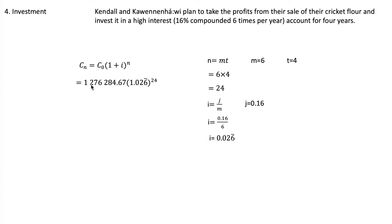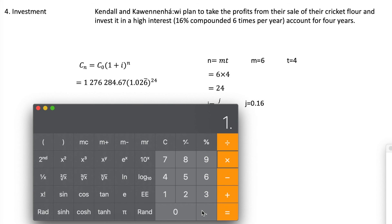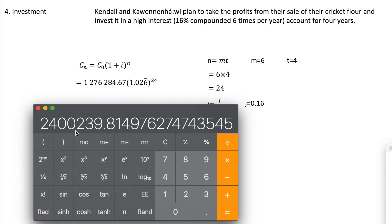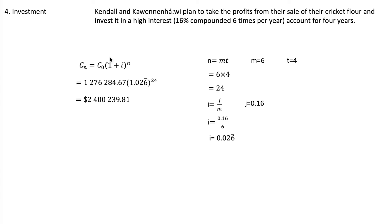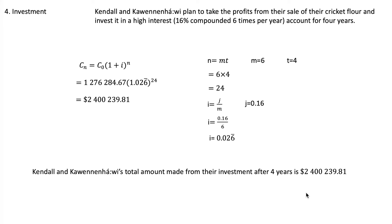So: $1,276,284.67 times 1.02666 repeating to the power of 24 equals $2,400,239.81, rounded to the nearest cent. That's a lot of money. After four years, Kendall and Gwena Howie have $2,400,239.81 earned from their cricket flour business. That is it — have a good day.